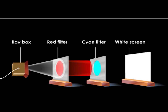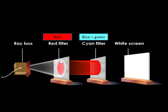What will happen when we place a primary filter and a secondary filter together? The red filter allows only red light to pass through. The cyan filter only allows blue and green light to pass through. Since no blue or green light passes through the red filter, and red light cannot pass through the cyan filter, therefore you can't see any light on the screen.